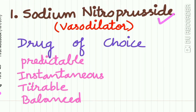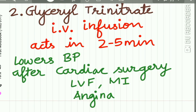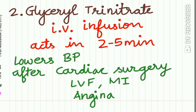The first drug used for emergency and urgency conditions is sodium nitroprusside, a vasodilator. It is the drug of choice because of its predictable, instant, titratable, and balanced actions. The second drug is glyceryl trinitrate — IV infusion is done, acts in 2 to 5 minutes, and it lowers BP after cardiac surgery, LVF, MI, and angina.